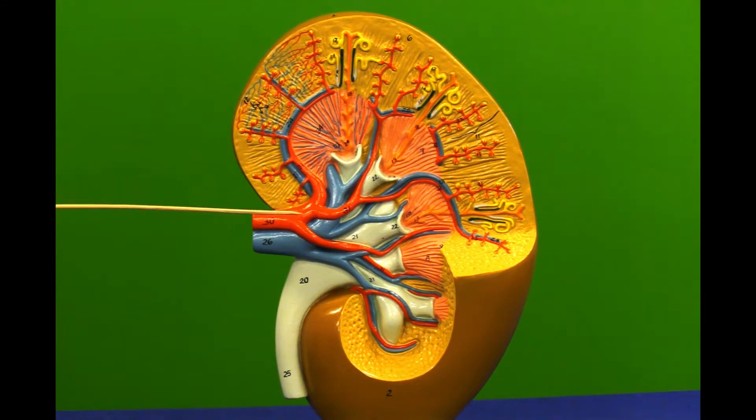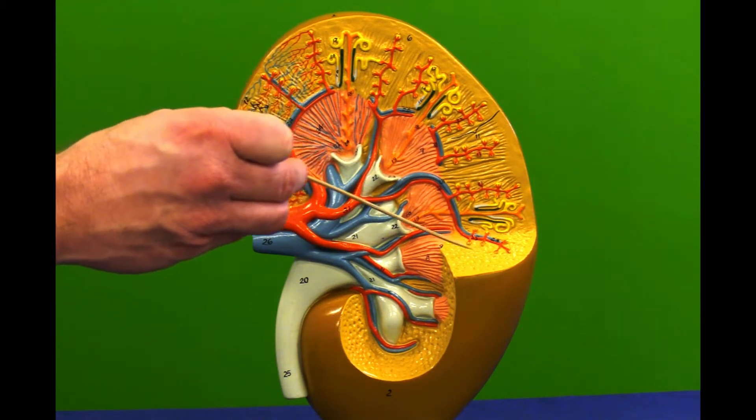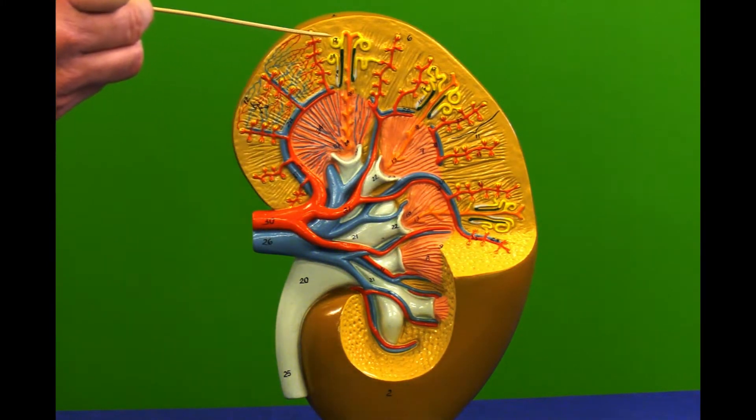As we look into the kidney, we can see this thick outer wall which is the cortex. The cortex houses all the nephrons.